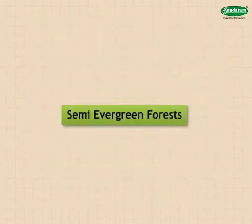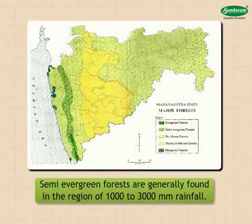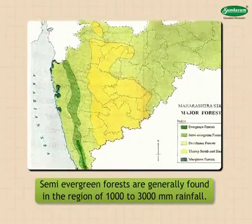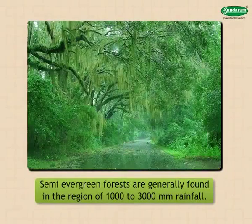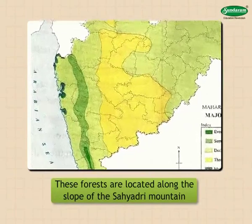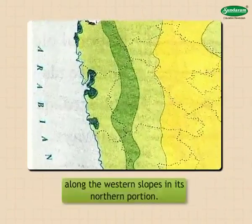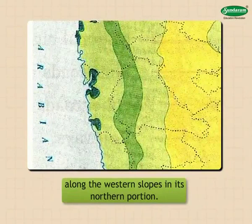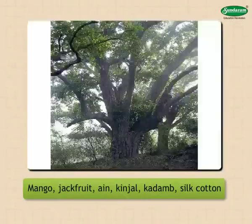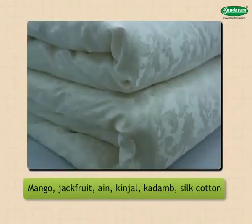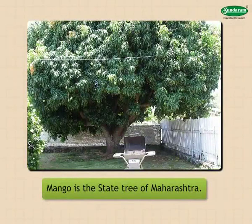Semi-evergreen forests are generally found in the region of 1000 to 3000 mm rainfall. The diversity of trees in these forests is limited compared to evergreen forests. These forests are located along the slopes of the Sahyadri mountains and along the western slopes in the northern portion. Mango, jackfruit, iron, kinjal, kadamb, and silk cotton are the major trees found in these forests. Mango is the state tree of Maharashtra.